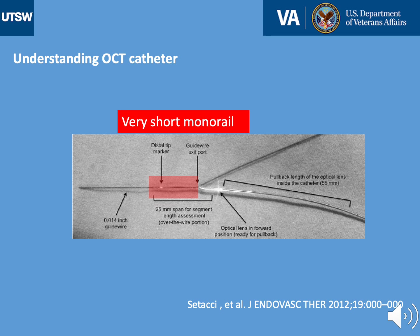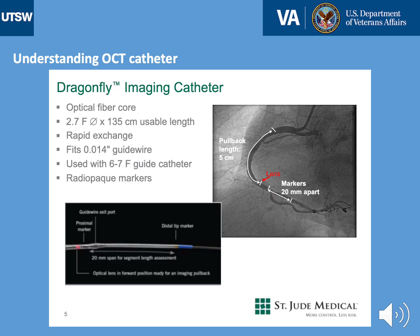The catheter has a short monorail and is prone to kinking in that segment, as shown in the red box. The catheter itself is 2.7 French with a usable length of 135 cm. It has rapid exchange ports, fits a 0.014 guidewire, and can go through a 6 to 7 French catheter. It has three radiopaque markers, with the second marker being where the actual lens is, located approximately 25 mm from the actual tip of the catheter.